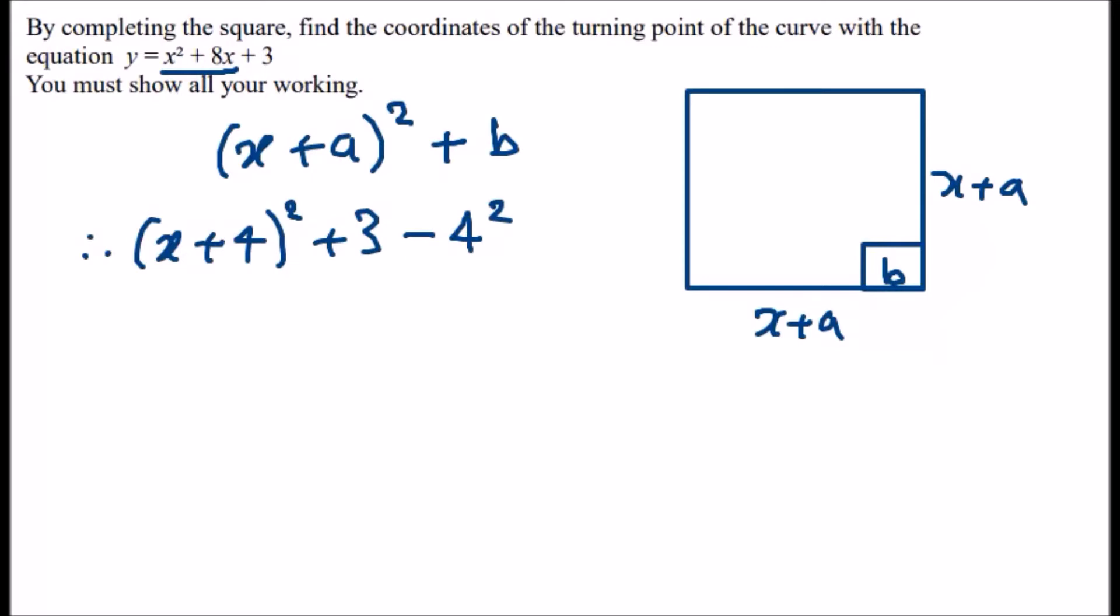Now we find out that these two can be simplified. So 3 take away 4 squared, which is 16, so 3 minus 16 is minus 13. Therefore, the complete square would be (x plus 4) all squared minus 13.